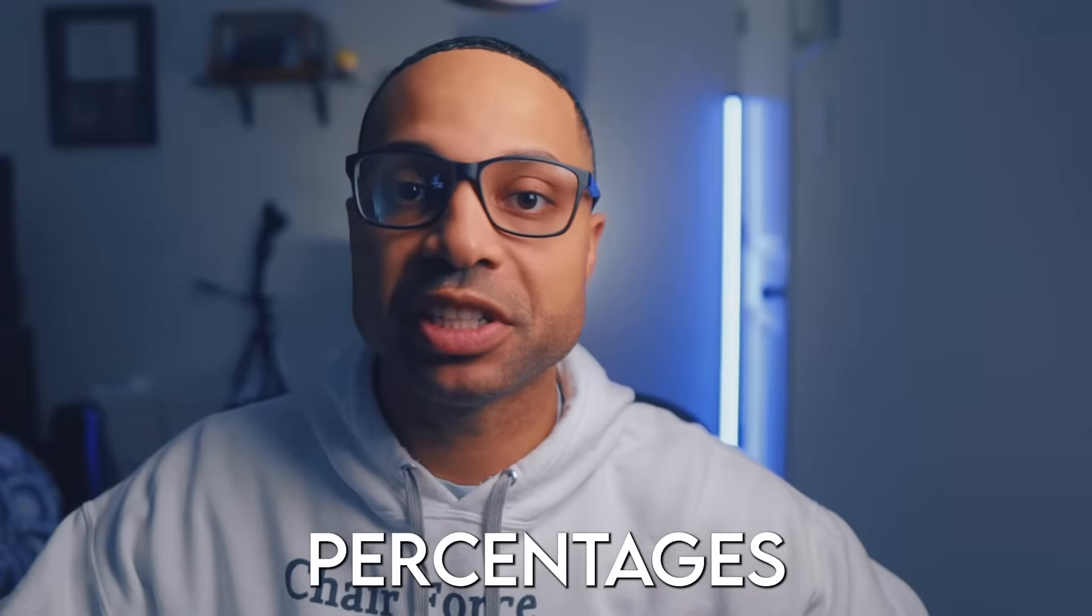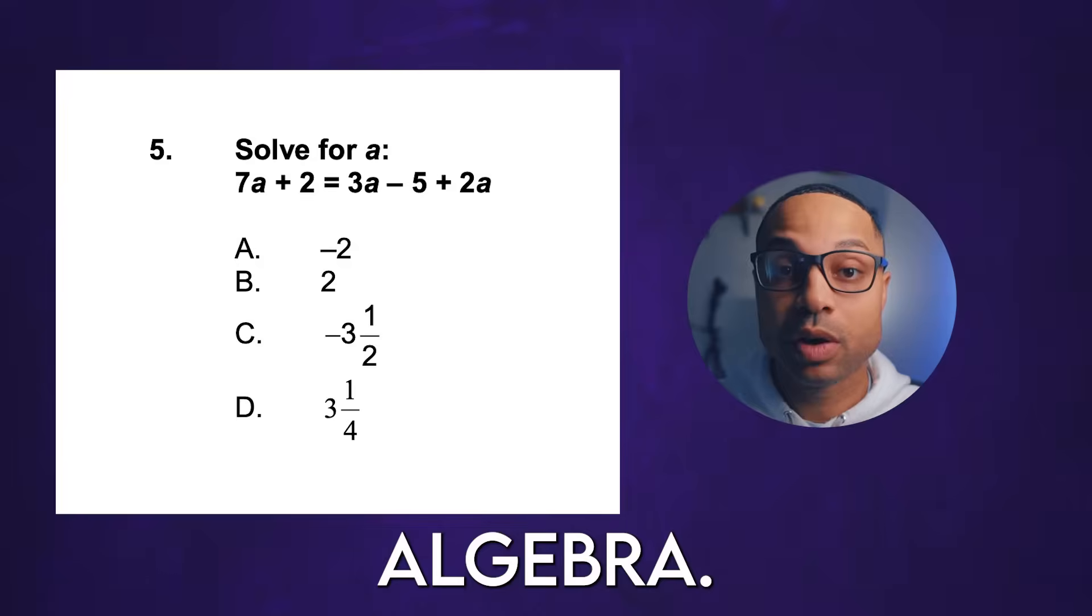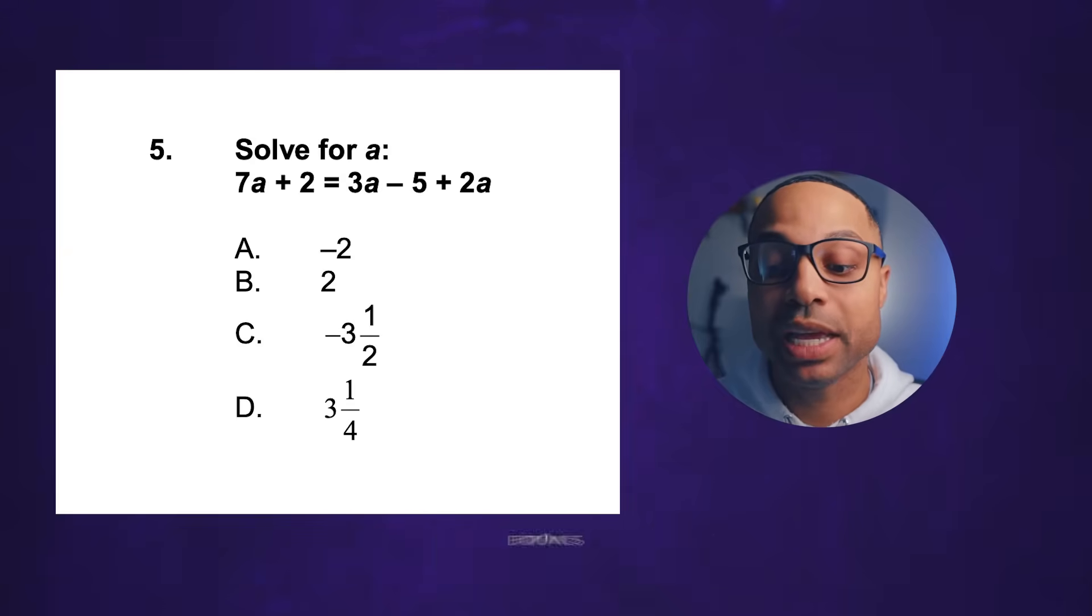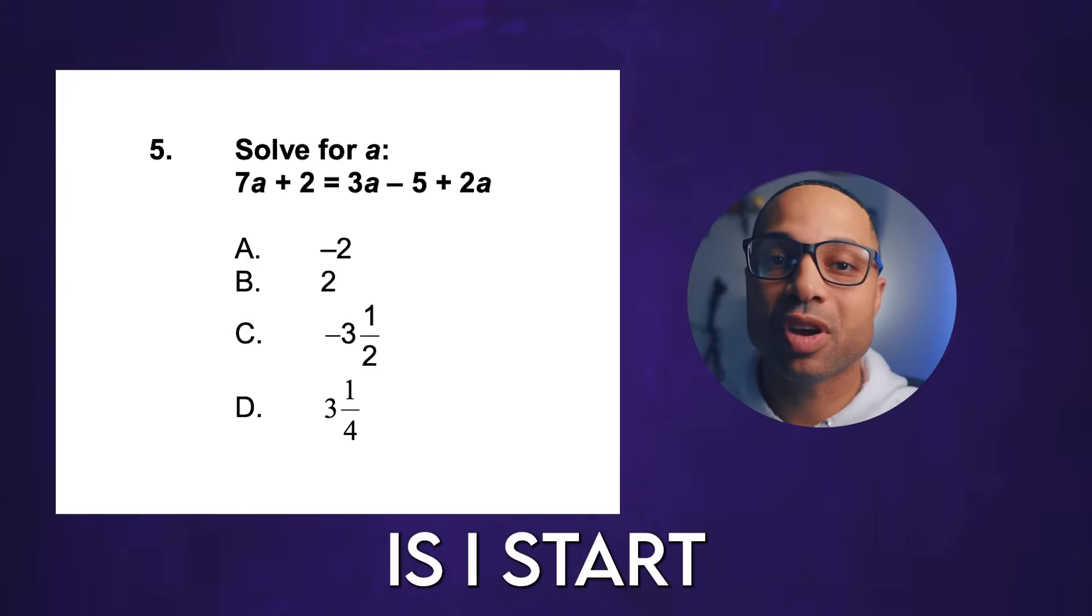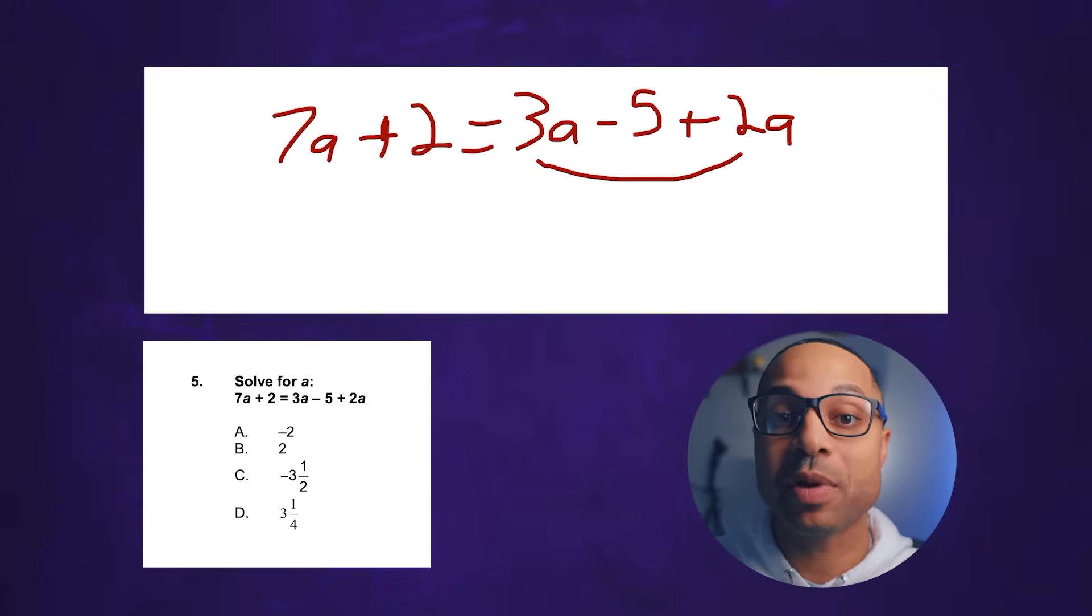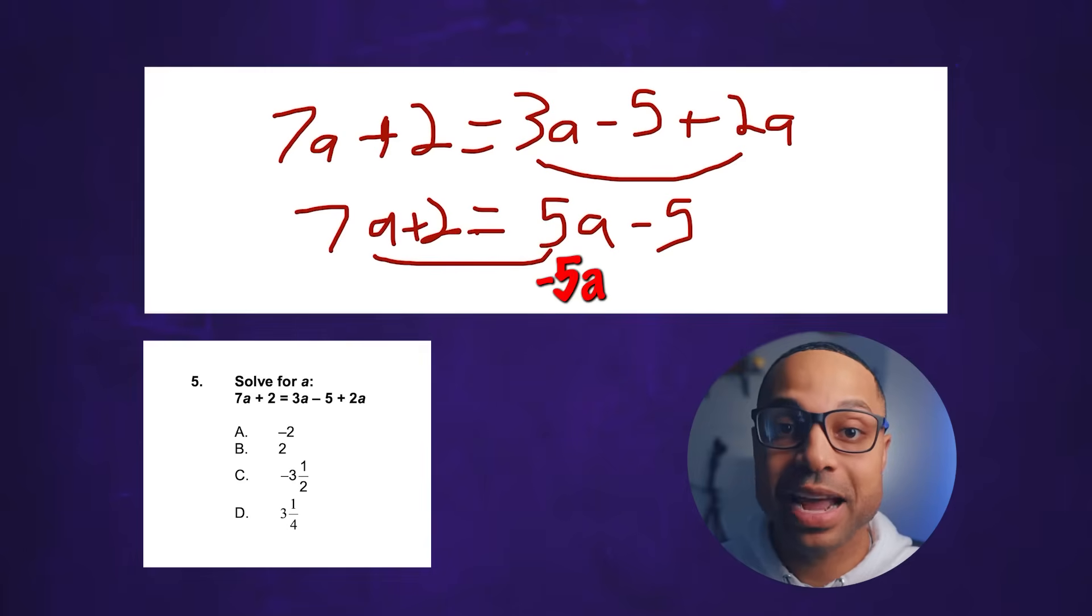Now we're going to take a look at some basic algebra. We want to solve for 7a plus 2 equals 3a minus 5 plus 2a. The way I like to figure out this problem is I start with the side that has two variables. So on the right side we have 3a plus 2a. I just add those up and that gives me 5a. Remember we still have that negative 5 over there. So now I want to cancel out one of the variables from one of the sides. In order to do this I'm going to subtract 5a on both sides. If I do it on the right side 5a minus 5a gives me zero. If I do it on the left side 7a minus 5a gives me 2a.